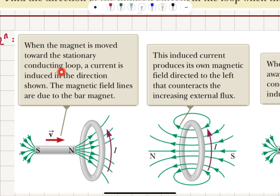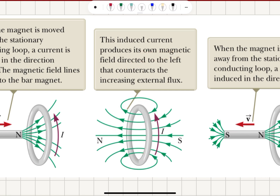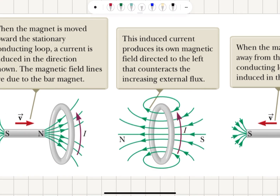When the magnet is moved toward the stationary conducting loop, a current is induced in the direction shown so that the increasing flux due to the bar magnet is opposed by the induced flux due to this current. This induced current produces its own magnetic field lines pointing to the left, whereas the flux due to the approaching bar magnet is pointing to the right — counteracting the increasing external flux.